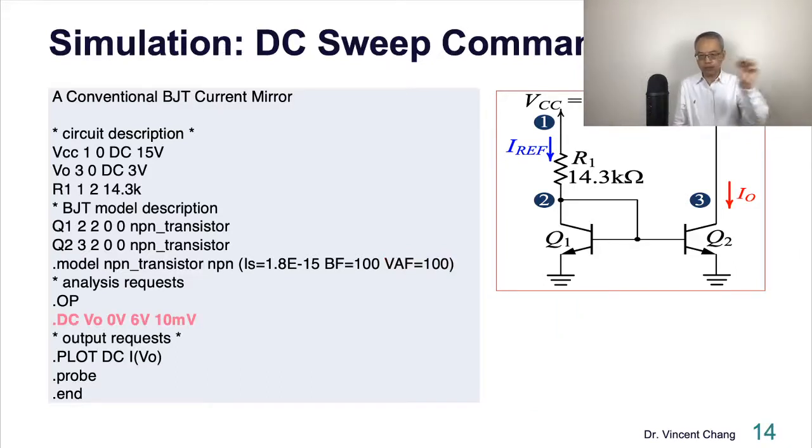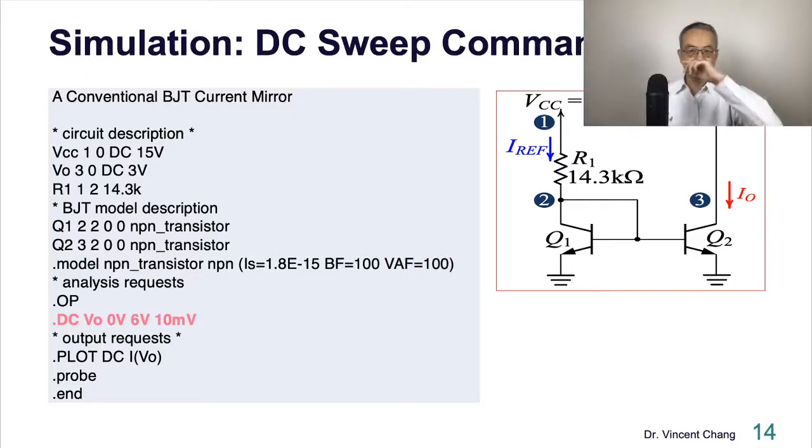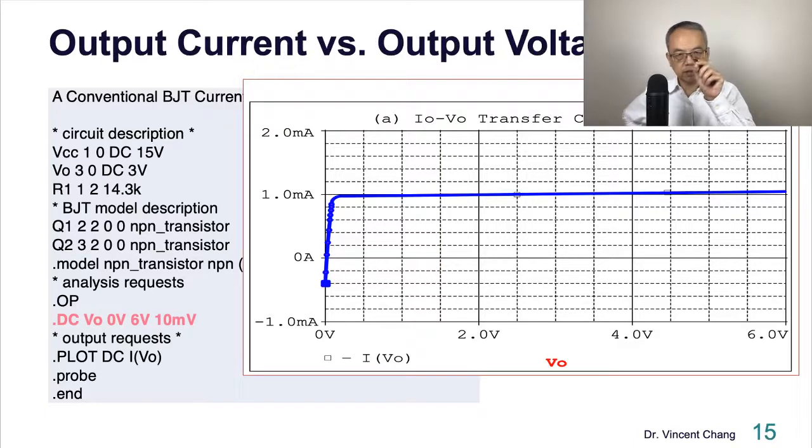100 volt represents the early voltage. You can estimate the output resistance of Q2: early voltage divided by the bias current, which is around 1 milliamp, so it's about 100 kilo ohm. Now let's pay attention to the DC sweep command. .DC, let's scan VO. You can easily do this with any simulation software. Scan VO from zero to six volt with the step size of 10 millivolt. You ask the computer software, every 10 millivolt calculate once. Then you get this.